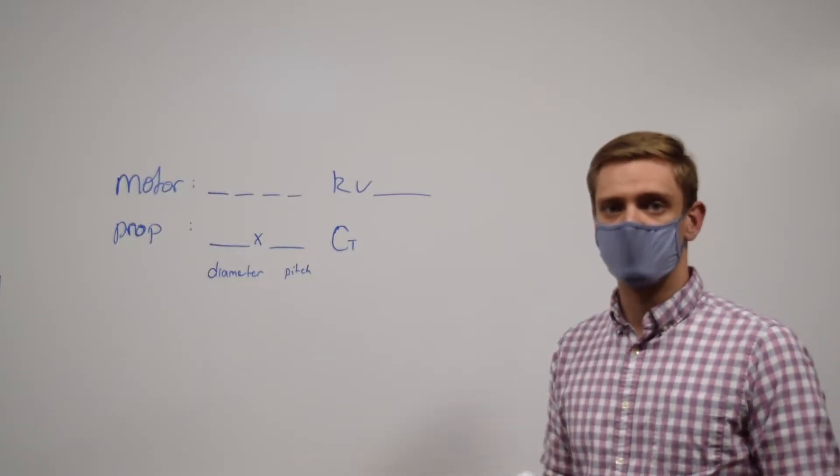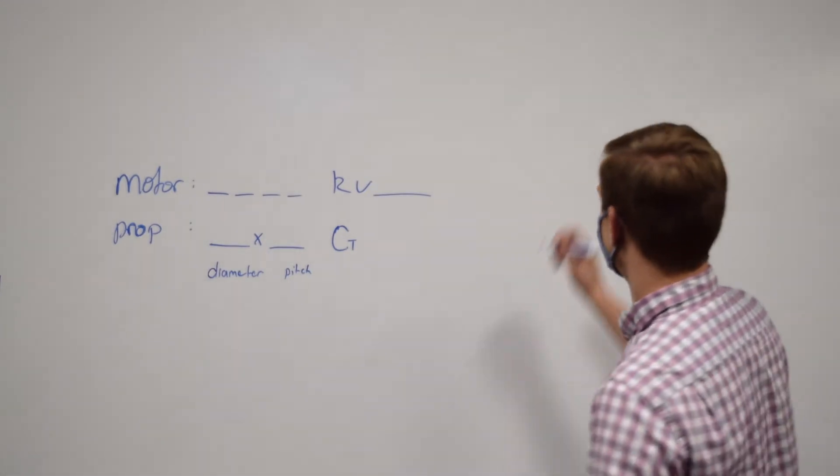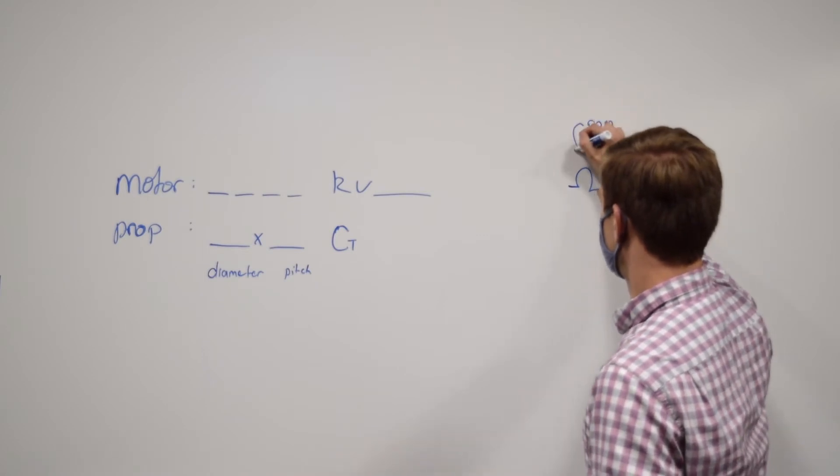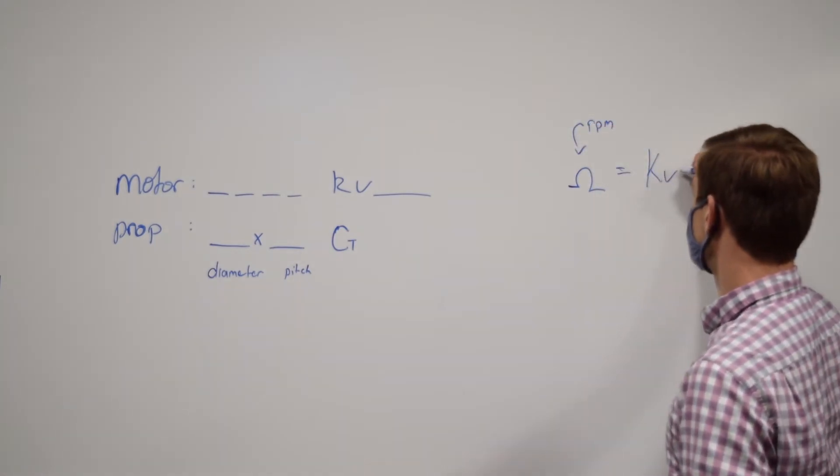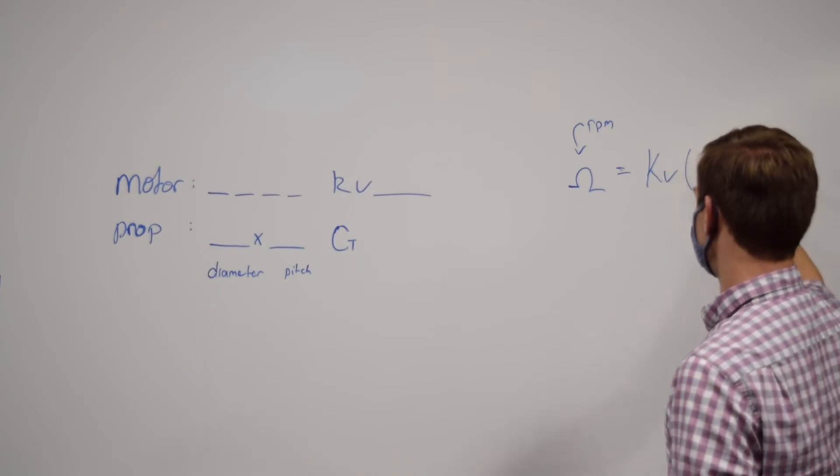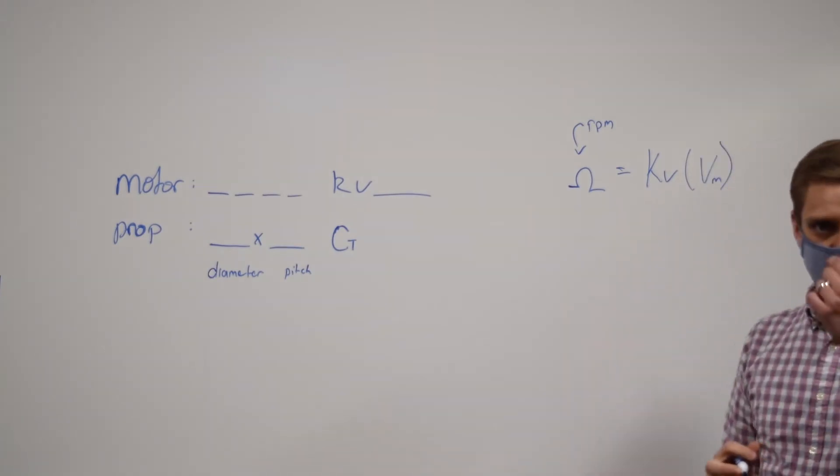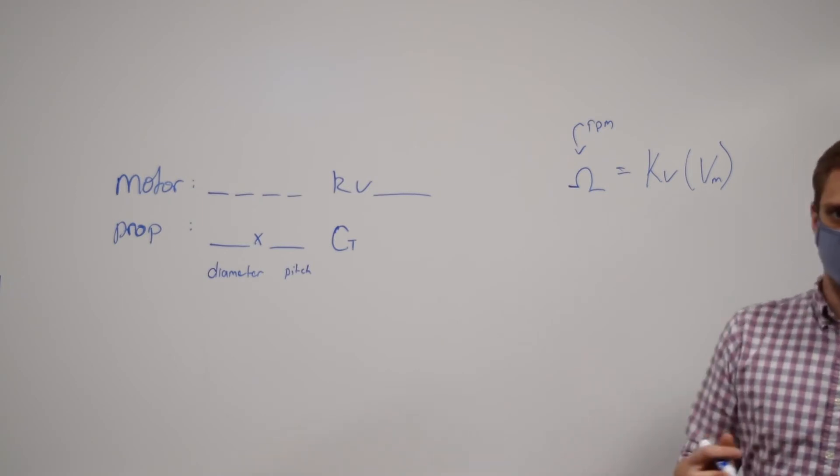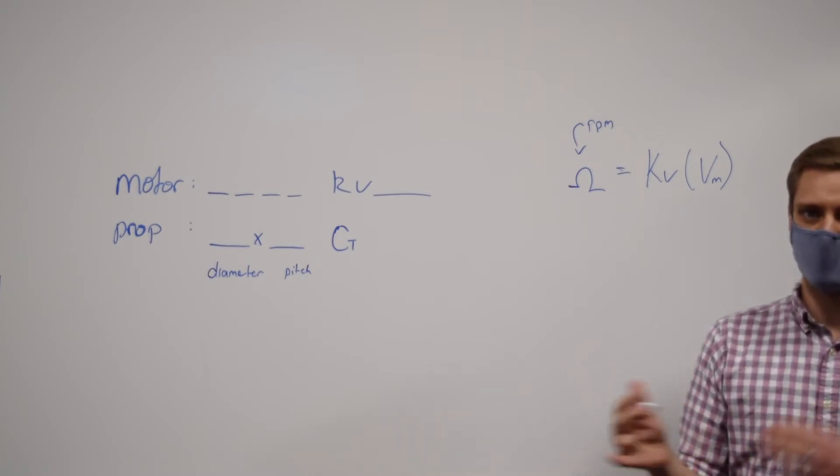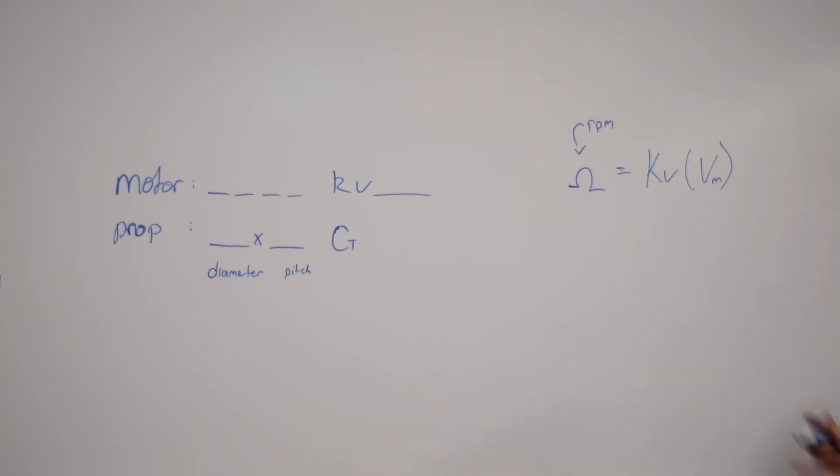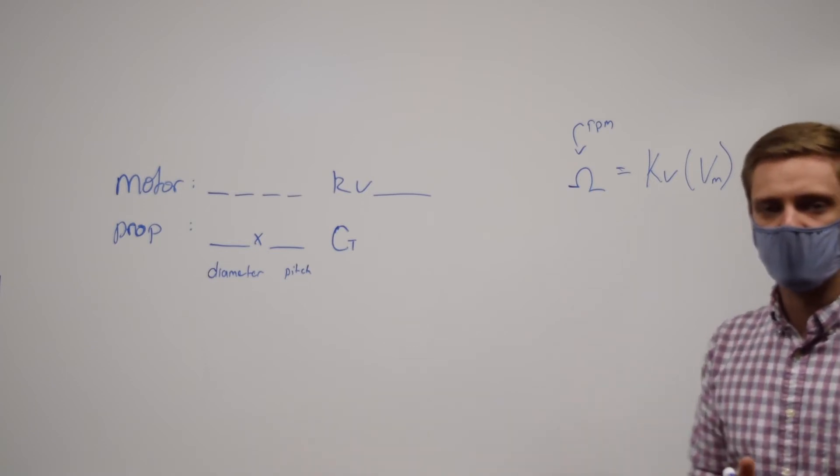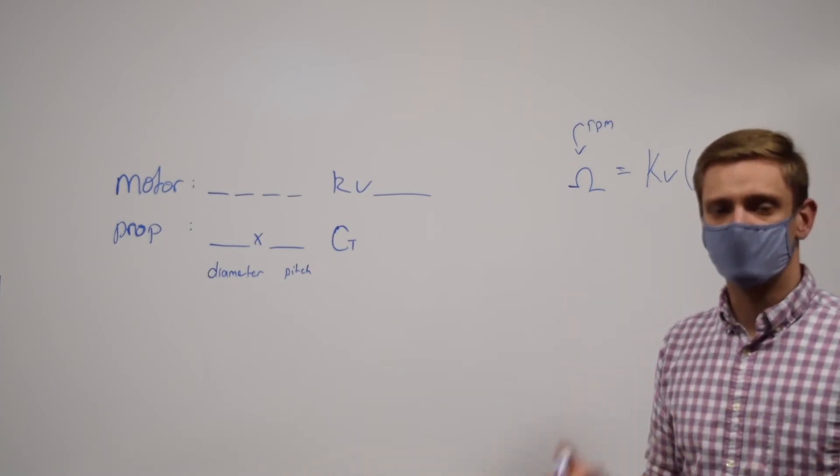We talked about before how KV is equal to rotations per minute per volt. The rotational speed is really important to be able to equate. Because we know that relationship, we can go ahead and say the rotational speed omega, which is in RPM, is equal to KV times your voltage. Really this voltage is the nominal voltage going into your motor after you've taken account for some of the resistances that come through your speed controller, your whole electrical system, and the motor itself. This is called back EMF voltage.